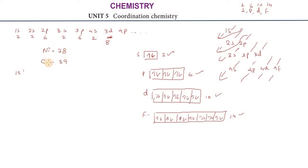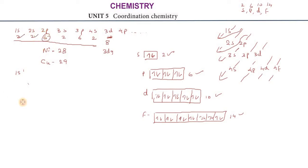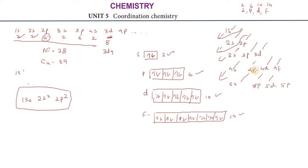Nickel and copper — copper is atomic number 29. Copper has a 3d9 configuration. Carbon has atomic number 6. Carbon's electronic configuration is 1s2, 2s2, 2p2. This is the energy level and a clear idea of electronic configuration.